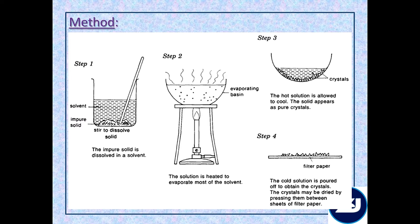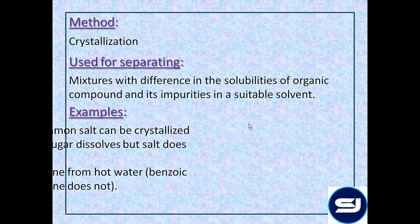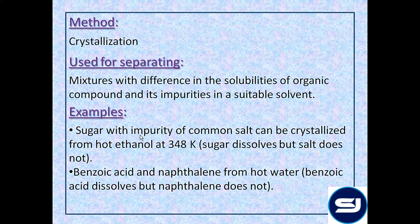The mixture is stirred to dissolve the organic compound. The solution is then heated to evaporate most of the solvent. The hot solution is allowed to cool and the solid appears as pure crystals. The cold solution is then poured off to obtain the crystals, which may be further dried by passing them between sheets of filter paper. For example, sugar with impurity of common salt can be crystallized from hot ethanol at 348 Kelvin — the sugar dissolves in hot ethanol but salt does not. Similarly, benzoic acid and naphthalene can be separated from hot water, where benzoic acid dissolves but naphthalene does not.